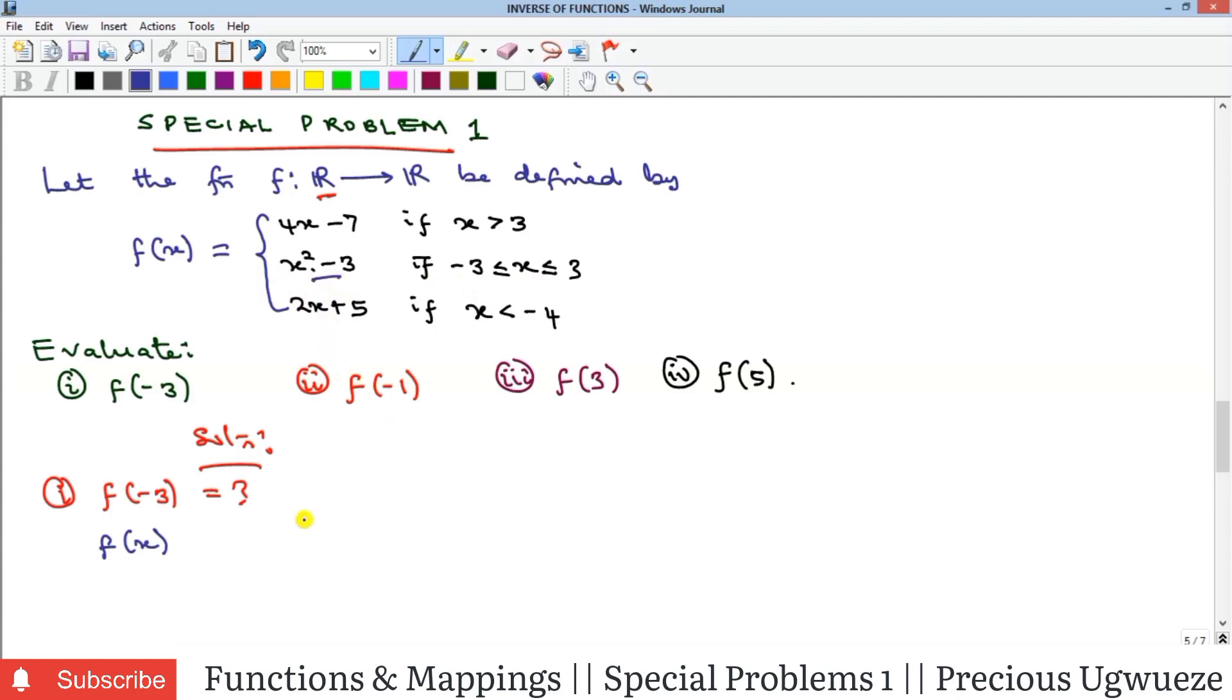Our f of x will be x squared minus 3, and that means our f of minus 3 will be minus 3 squared minus 3, which gives us 6 as the solution.